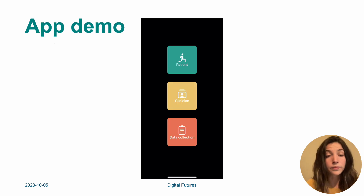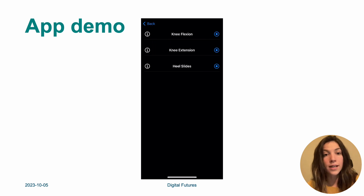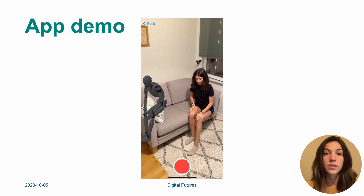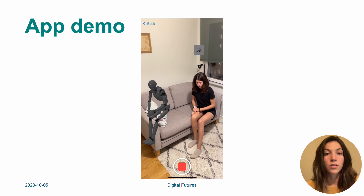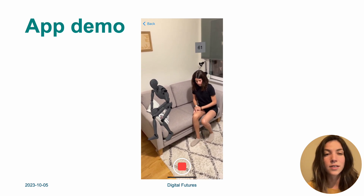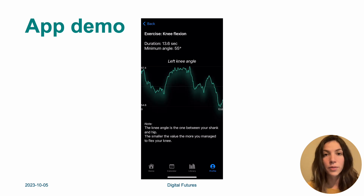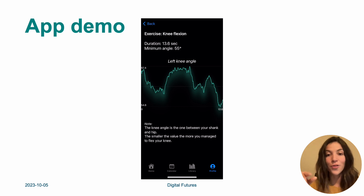Here we see an app demo. Right now we have three versions: one for the patient, one for the clinician, and one for data collection. In the patient view, the patient goes through their schedule with day one and day two. Inside day one they see the exercises, choose the first one — the knee flexion — and record the data so the clinician can later review it. Here we see the patient sitting on the couch trying to flex the knee, with visual feedback on the angle showing when the extension is not sufficient. Once the exercise is done, the user can go to their profile and see feedback for that specific exercise, including duration, the minimum angle achieved, and how this changes throughout the exercise. They also see their goal — the smaller the value, the more they manage to flex their knee.